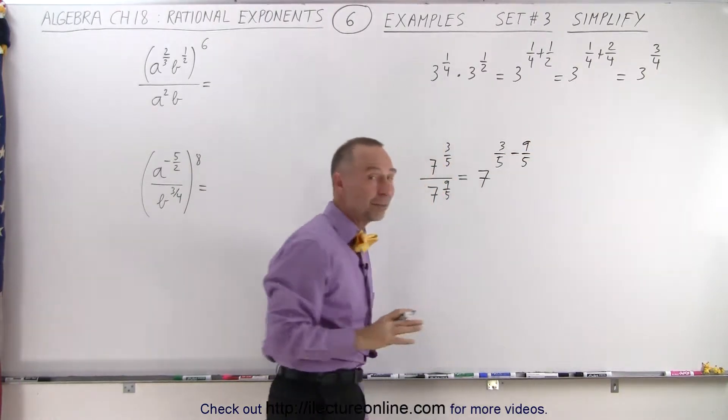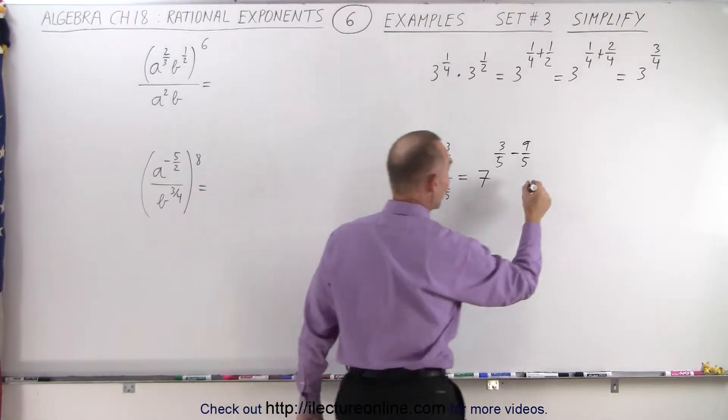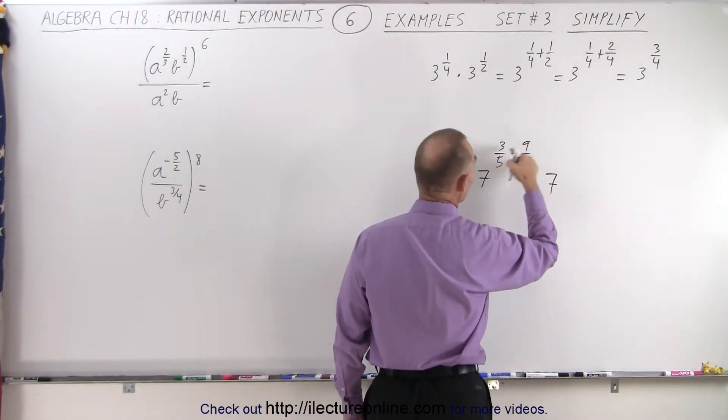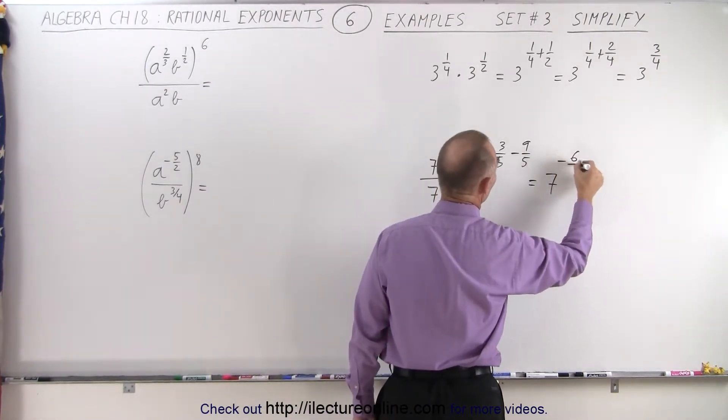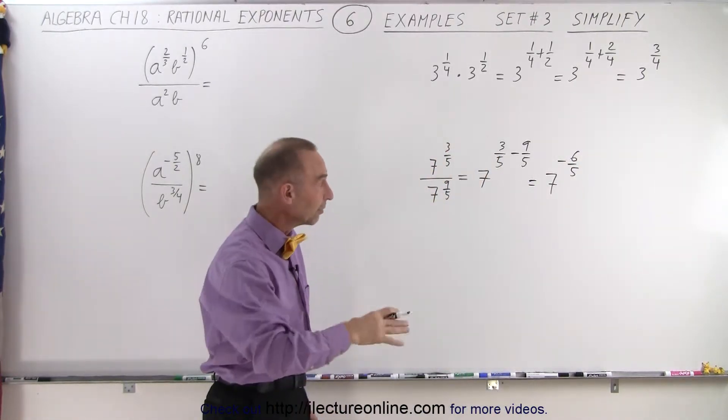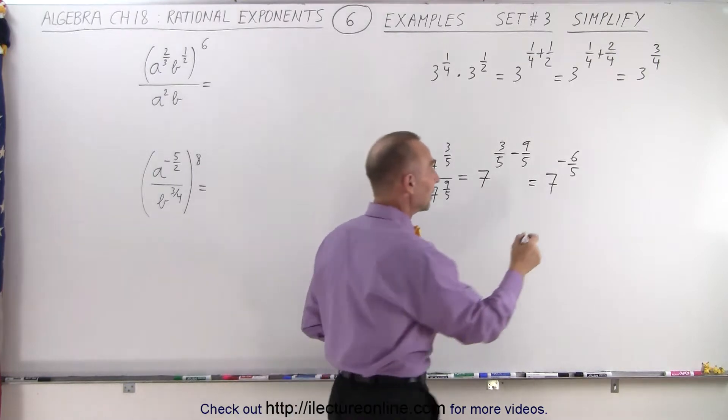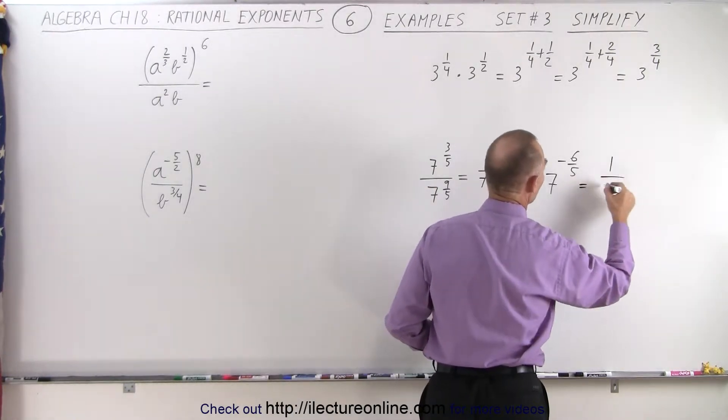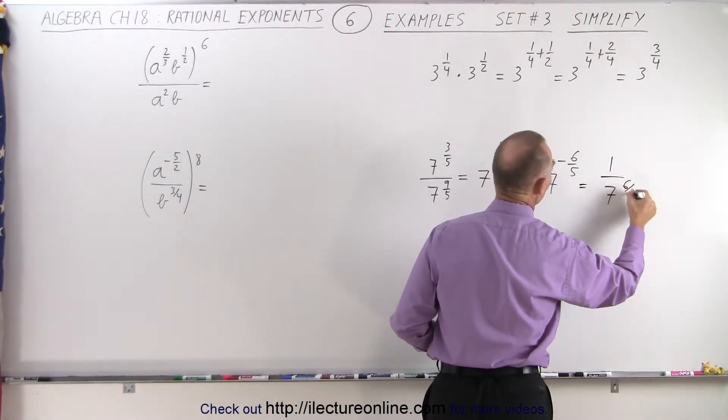Luckily here, the denominators are the same. So we can simply subtract. This is equal to 7 to the 3 minus 9, which is minus 6 over 5. And then we can take that negative exponent and write it as a positive exponent by moving that to the denominator. So this becomes 1 over 7 to the 6/5 power.